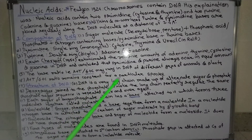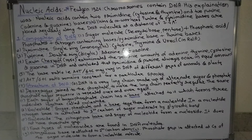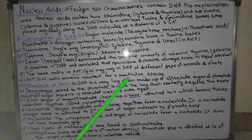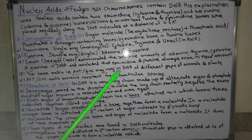The ratio of (adenine + thymine) to (guanine + cytosine) may vary in DNA of different groups of animals and plants. However, for a particular species, this ratio remains constant. So within one species the ratio is the same, but between different species the ratio will be different.